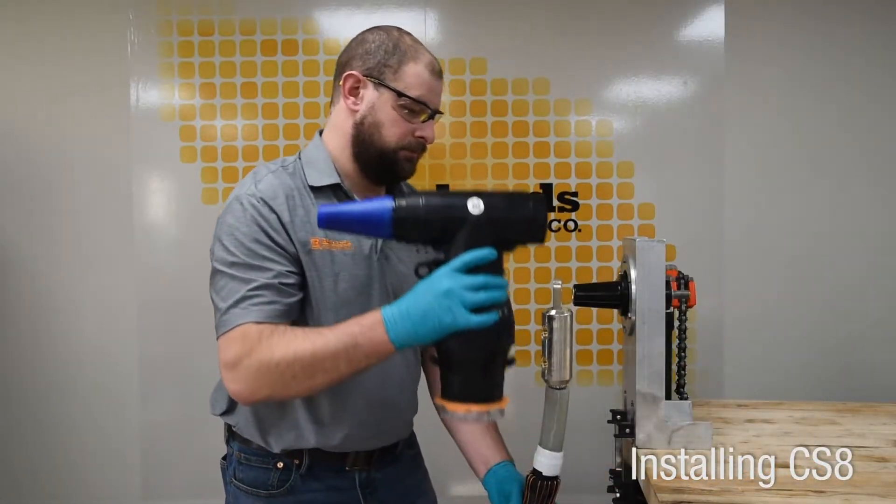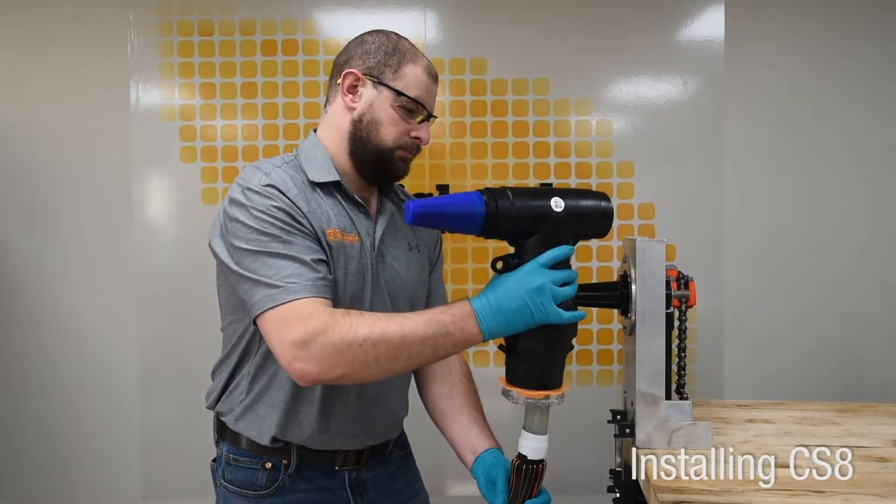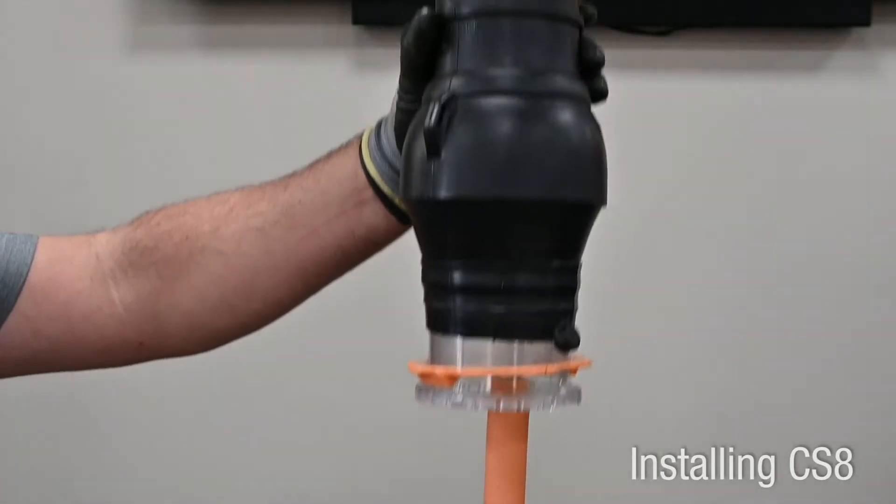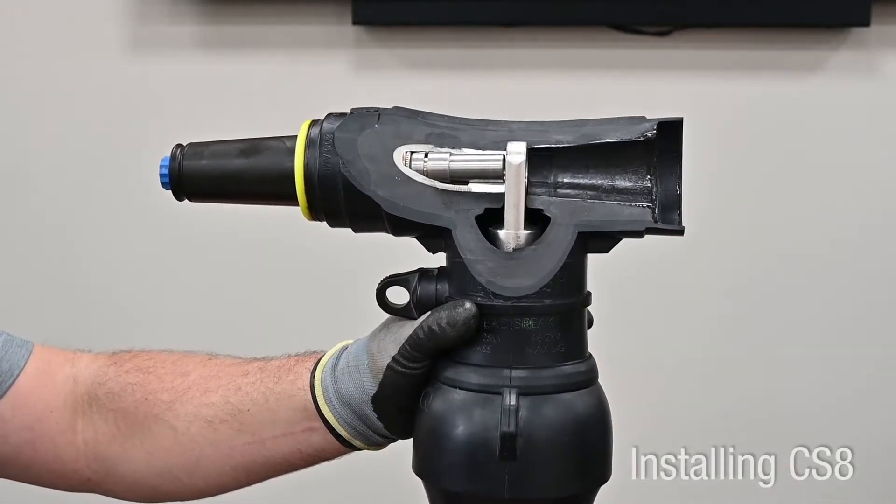Install CS8 onto cable until the lug is fully seated within the housing. A cutaway view illustrates the full seated positioning of the lug spade inside the housing.